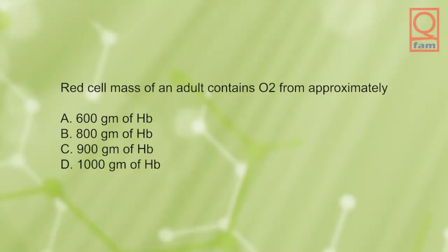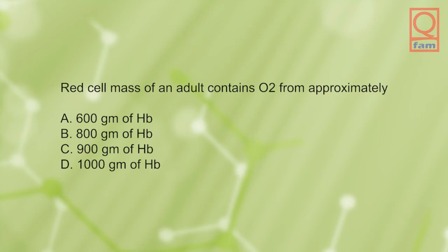Red cell mass of an adult contains oxygen from approximately: A) 600 grams of hemoglobin, B) 800 grams of hemoglobin, C) 900 grams of hemoglobin, D) 1000 grams of hemoglobin. The answer is A, 600 grams of hemoglobin.